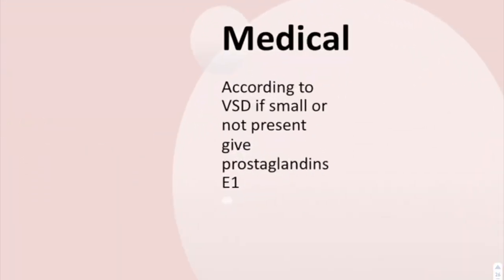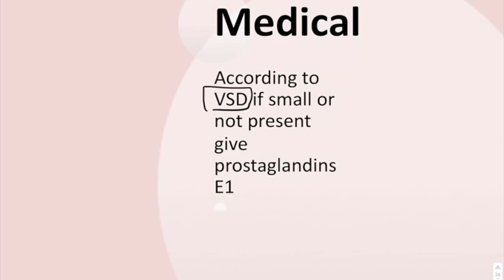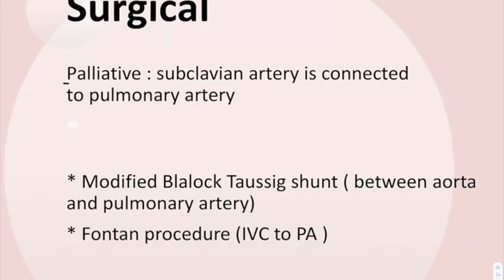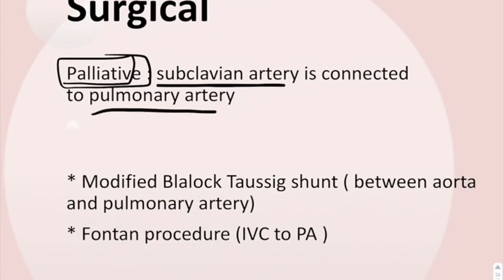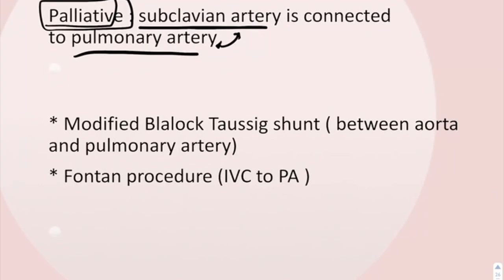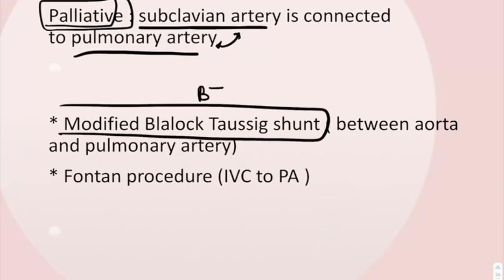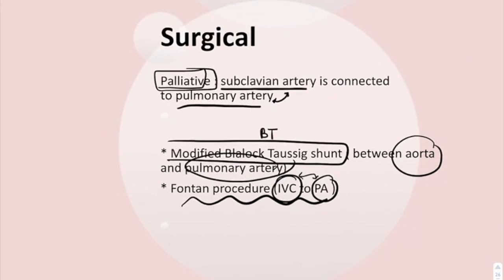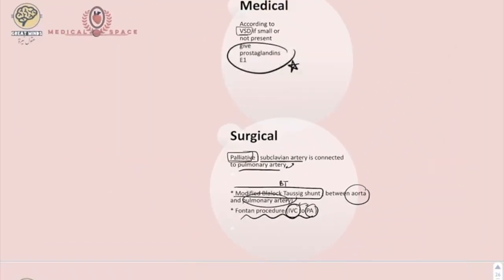Medical treatment: if the VSD is small or absent, give prostaglandin E1. Surgical palliative treatment connects the subclavian artery to the pulmonary artery, and a modified BT shunt connects the aorta and the pulmonary artery. The Fontan procedure connects the inferior vena cava to the pulmonary artery. The goal of all these interventions is to increase blood flow to the pulmonary artery.